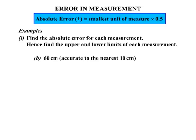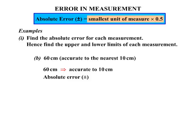Part B: 60 centimetres, where the measurement is accurate to the nearest 10 centimetres — in other words, rounded off to the nearest 10 centimetres. The absolute error is the smallest unit of measure multiplied by 0.5: 10 centimetres times 0.5, which works out to be plus or minus 5 centimetres.